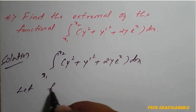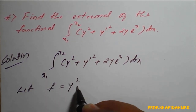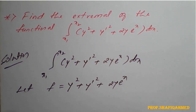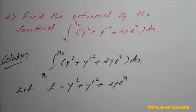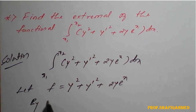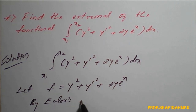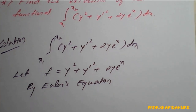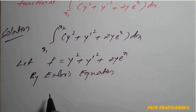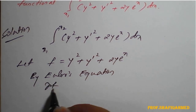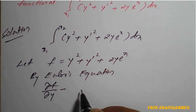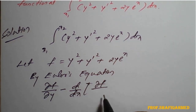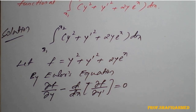Let the function f be y squared plus y-dash squared plus 2y times e raised to x. By Euler's equation, that is ∂f/∂y minus d/dx of ∂f/∂y-dash equals 0.